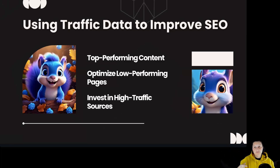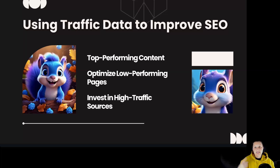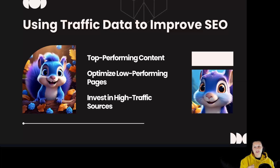Using traffic data to improve SEO: top performing content — focus on replicating successful pages. Optimize low performing pages — improve pages with low traffic. Invest in high traffic sources — allocate resources to the most effective channels. Use the traffic data to identify what's working and what's not, improve low performing pages, and invest more in high traffic sources to boost your overall site's performance.